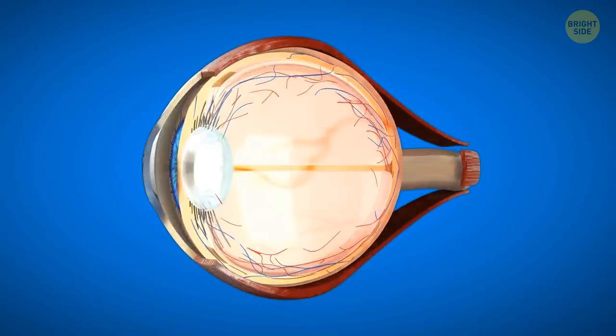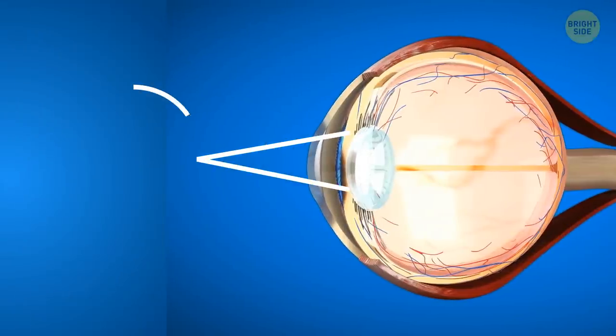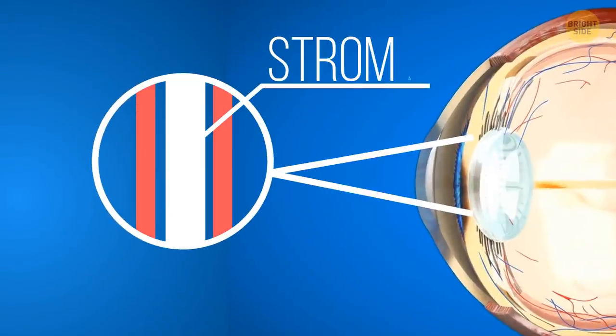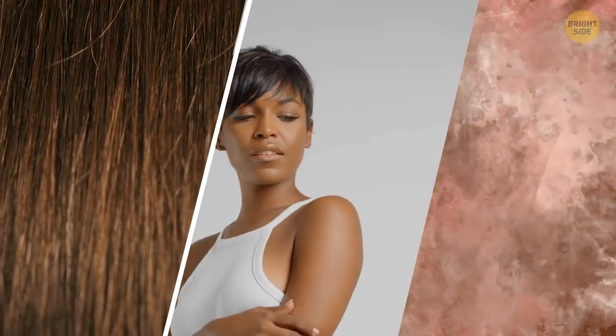The eye's iris, that part that has a color, consists of two layers: the front one and the back one, and another layer in between them, the stroma. Each of these layers has some melanin in it. Melanin is a pigment present in your body that determines your skin, hair, and eye color.